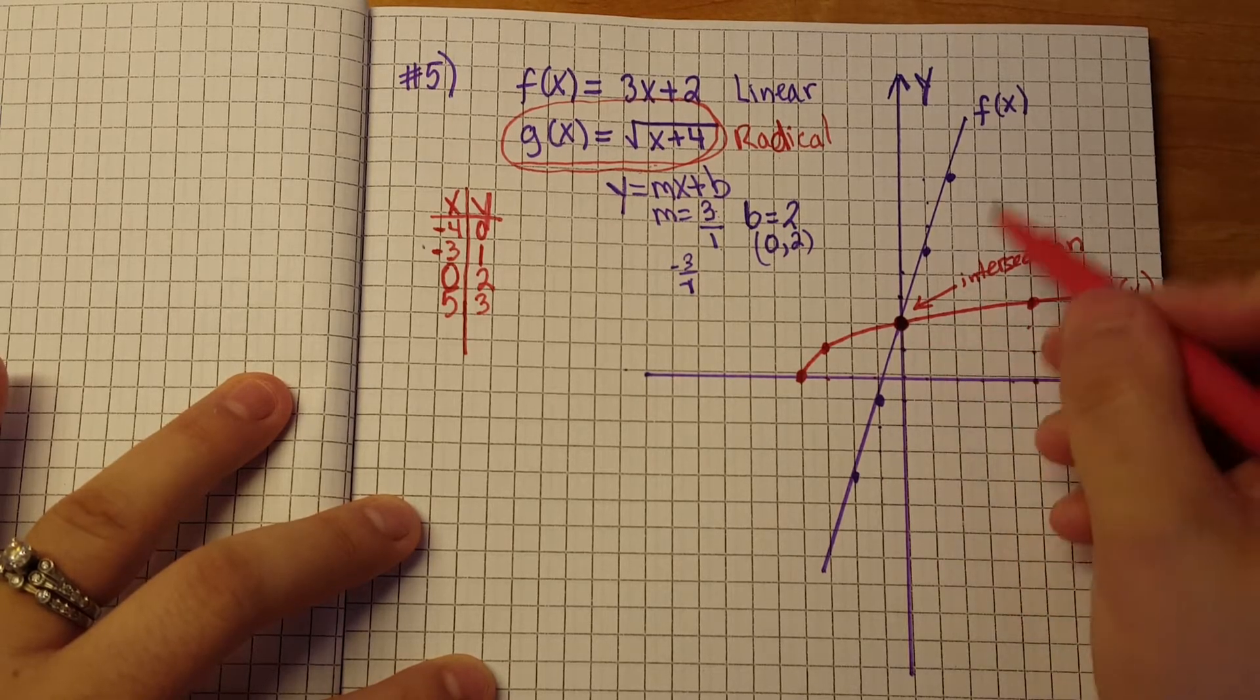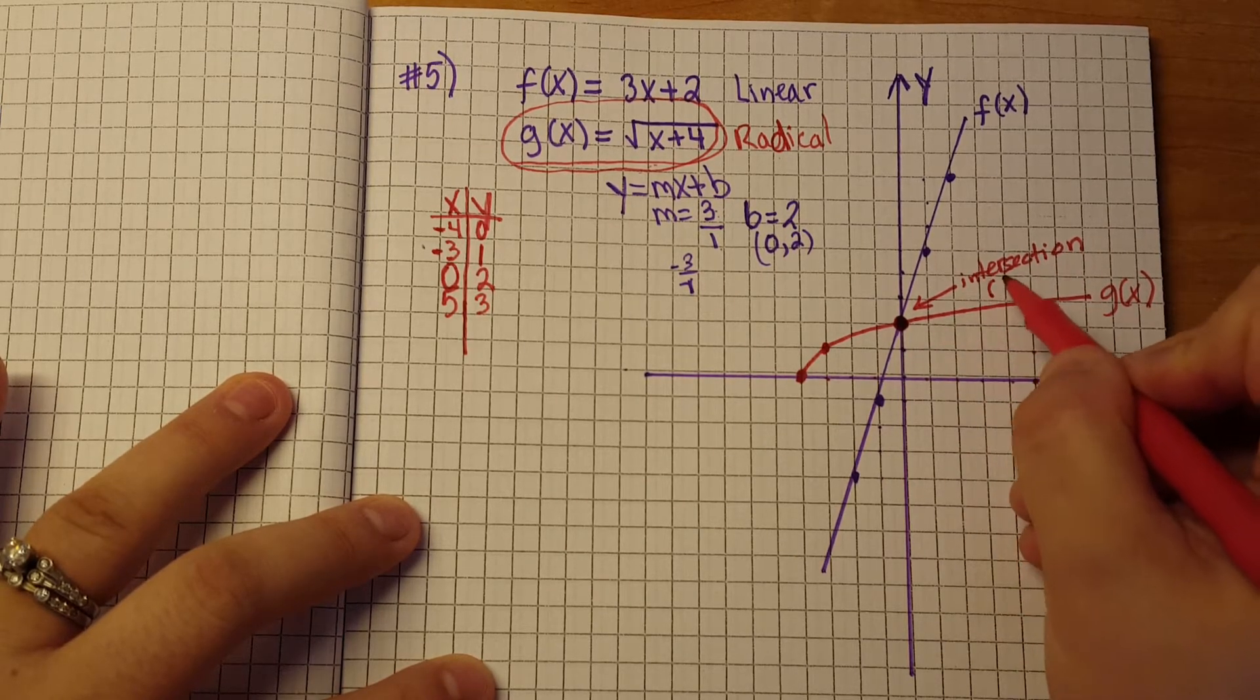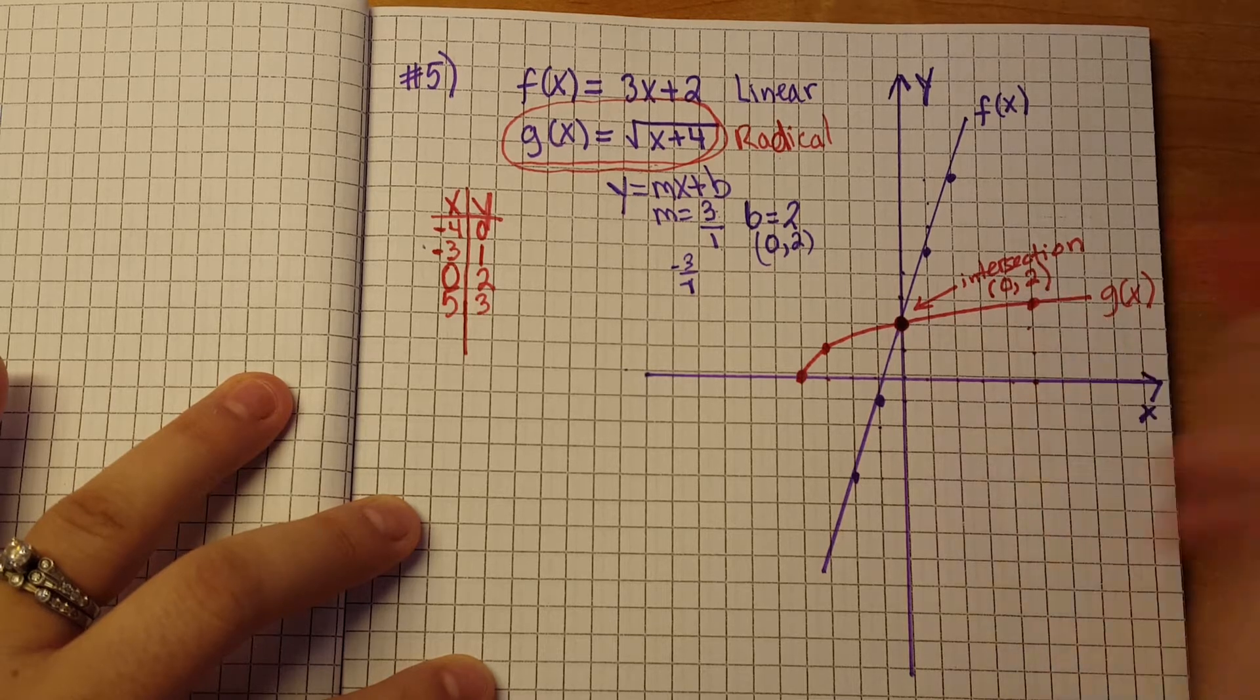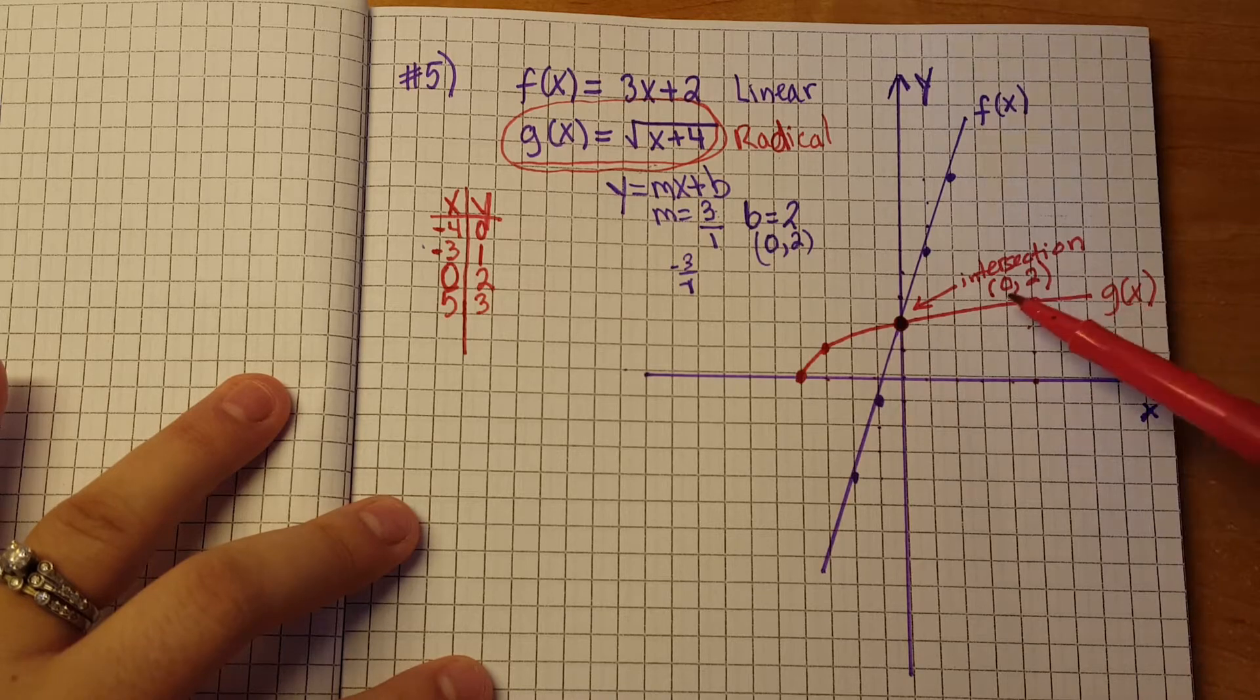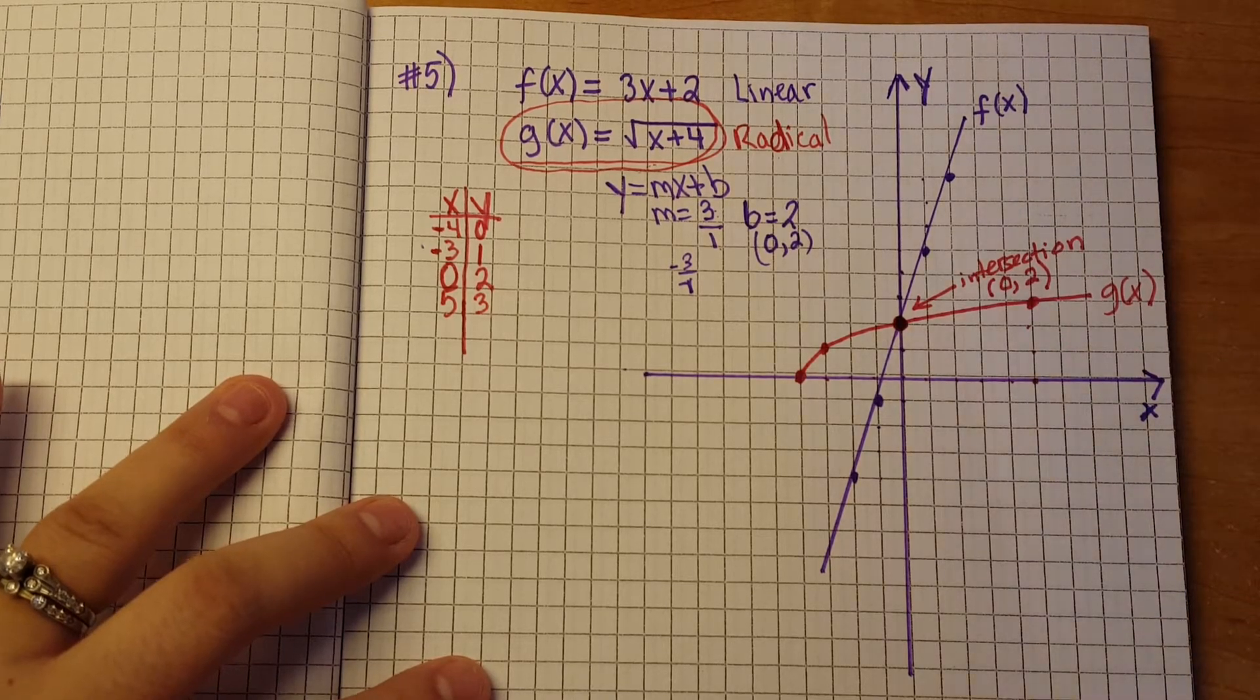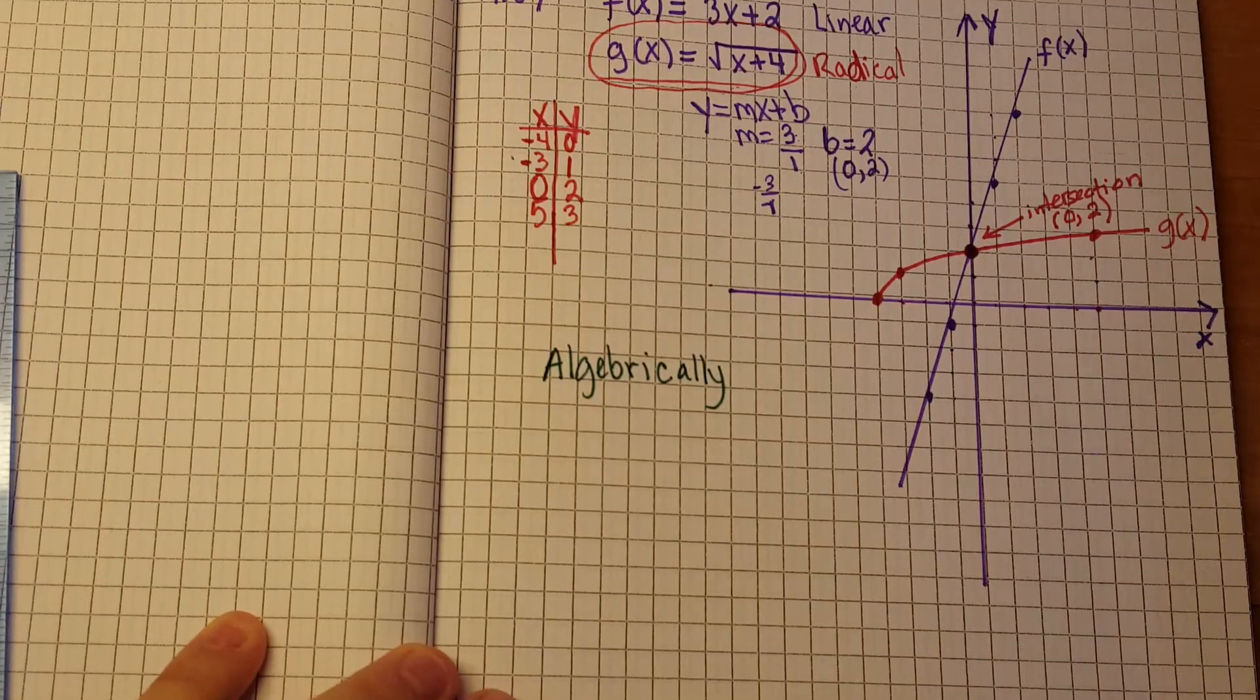So graphically, these two equations meet at 0, 2. So in this particular example, there's only one intersection and that one intersection is 0, 2.